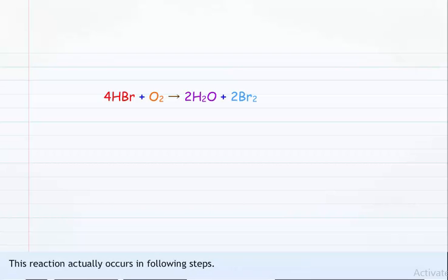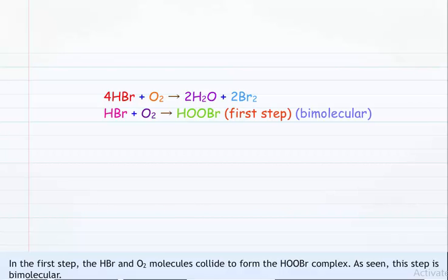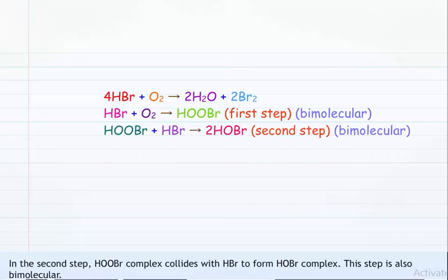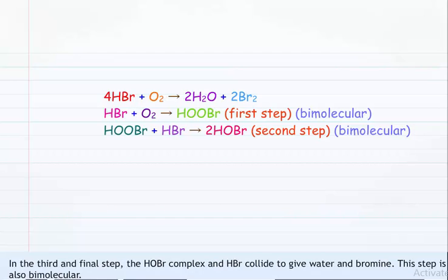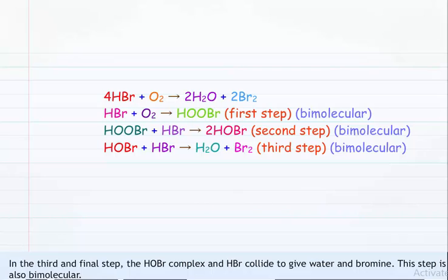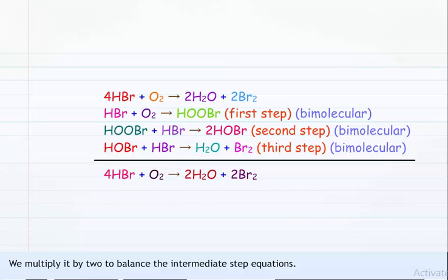This reaction actually occurs in steps. In the first step, HBr and O2 molecules collide to form the HOOBr complex — this step is bimolecular. In the second step, the HOOBr complex collides with HBr to form a HOBr complex — also bimolecular. In the third and final step, the HOBr complex and HBr collide to give water and bromine — also bimolecular. The final step is multiplied by two to balance the equations, giving the balanced final equation. At no point does the molecularity increase beyond two.